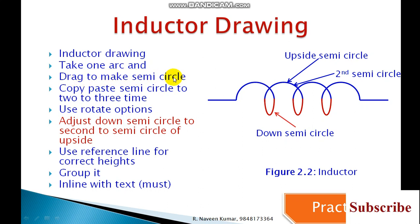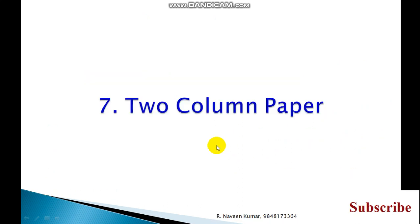The same steps I explained in the PPT: draw the inductor by taking one arc, drag it to make a semicircle, copy and paste the arc in three or four places, use the rotate option to adjust the down semicircle, align them to the first and second arcs, group everything including the reference lines, and set 'In Line with Text'. This is how to draw the inductor. In the next video I will explain how to make a two-column paper. Thank you very much.